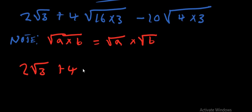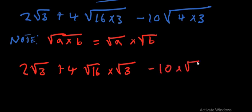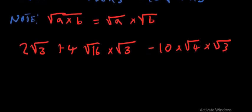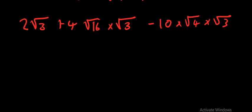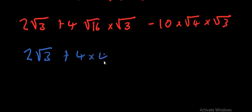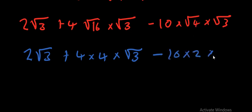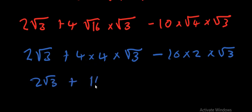Applying the rule, we get: 2√3 + 4·√16·√3 − 10·√4·√3. We can find these without a calculator: √16 = 4 and √4 = 2. So this becomes: 2√3 + 4·4·√3 − 10·2·√3, which gives 2√3 + 16√3 − 20√3.